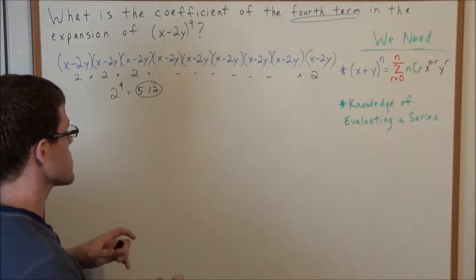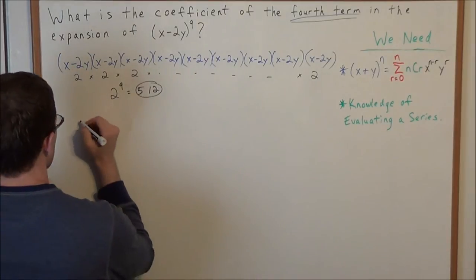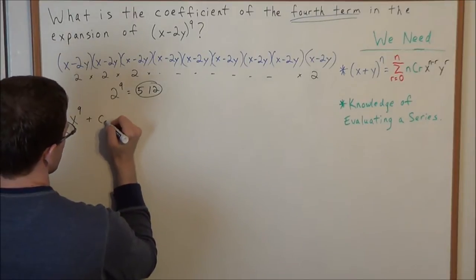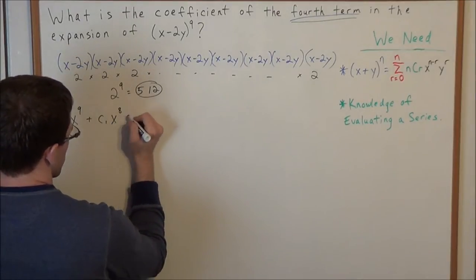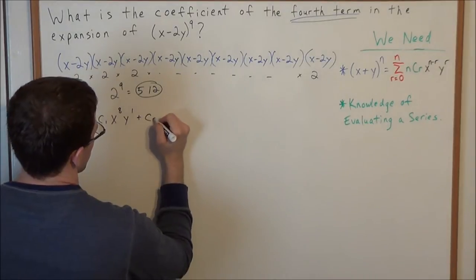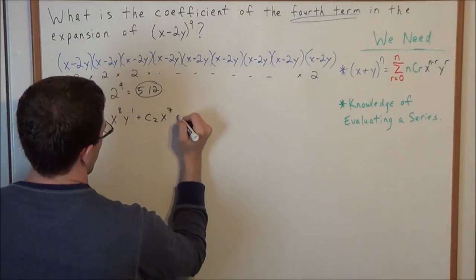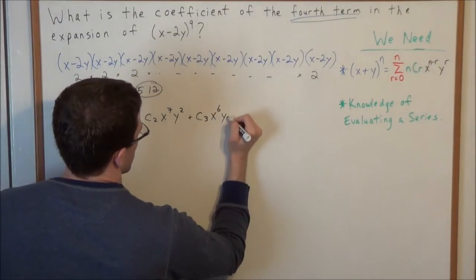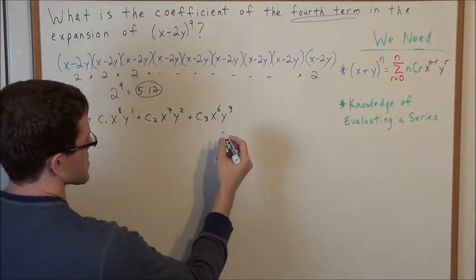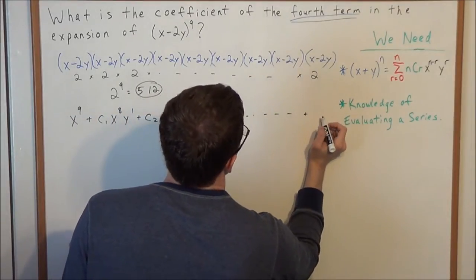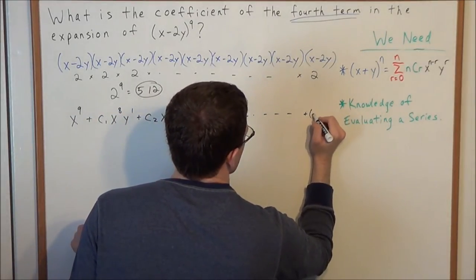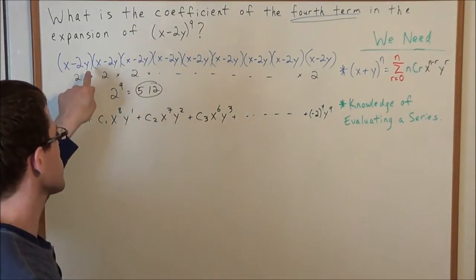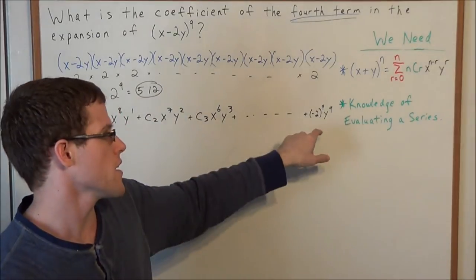Out of those 512 pieces, we would need to sort through them. We would have exactly one x to the ninth term, then some number of x to the eighth y to the one terms, some number of x to the seventh y to the second, and some number of x to the sixth y to the third. And finally the last piece, if we organize this, would be negative 2 to the ninth y to the ninth — the result of negative 2y times negative 2y done nine times.